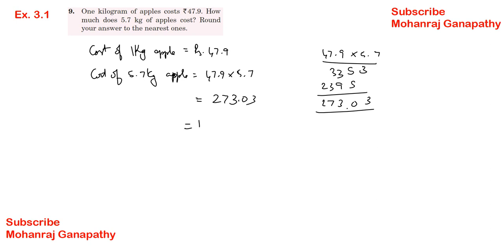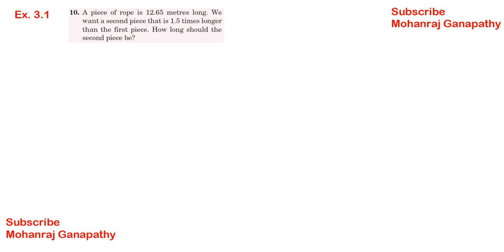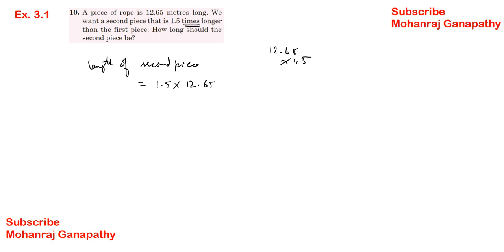Exercise 3.1, Sum number 10: A piece of rope is 12.65 meters long. We want a second piece that is 1.5 meters longer than the first piece. How long should the second piece be? Length of second piece equals 1.5 times 12.65. Working: 12.65 into 1.5 - 5 times 5 is 25, 30, 32, 3, 10, 13; then 5, 6, 5, 6, 2 - answer is 18.975 meters.